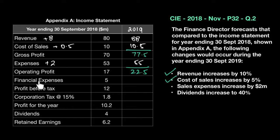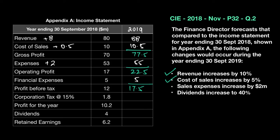We're not given any changes in the question for financial expenses or corporation tax, so we assume financial expenses remain the same. If it was 5 in 2018, it's 5 in 2019. As a result, my profit before tax now becomes 17.5, because financial expenses are deducted from operating profit.